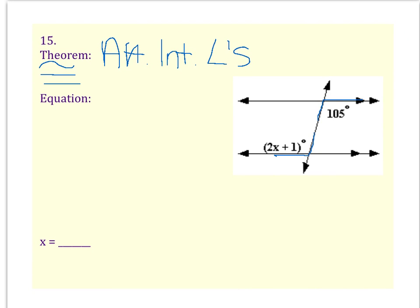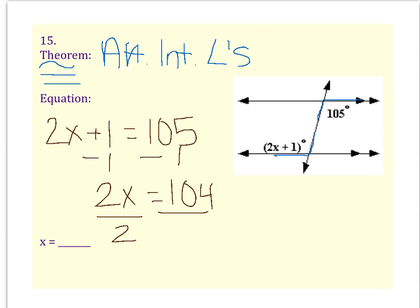We have 2x plus 1 equals 105. I subtract the 1 and get 2x equals 104. When I divide both sides by 2, x is 52. So my answer for this is 52. This concludes the video, solve for x using parallel lines and a transversal.